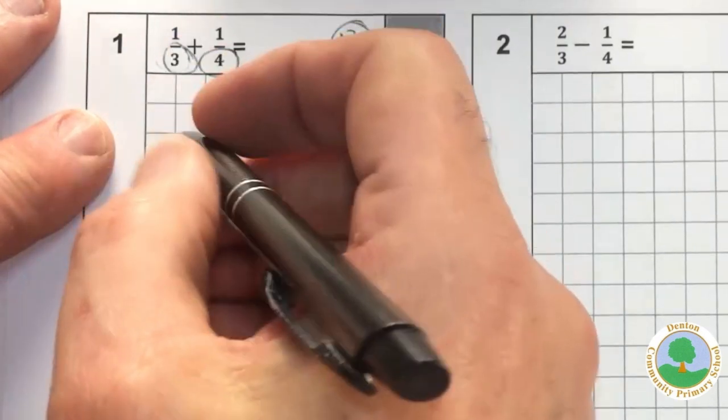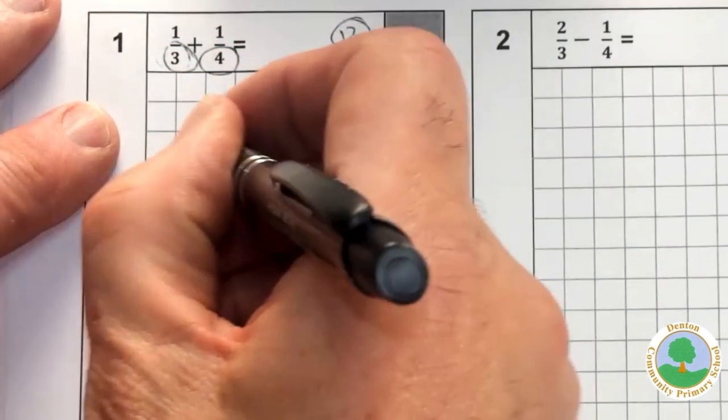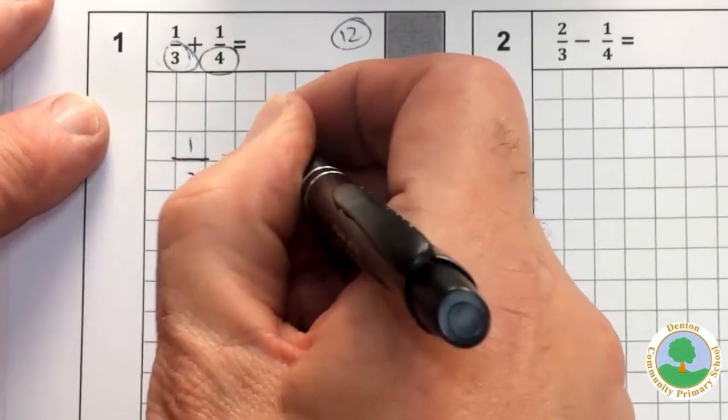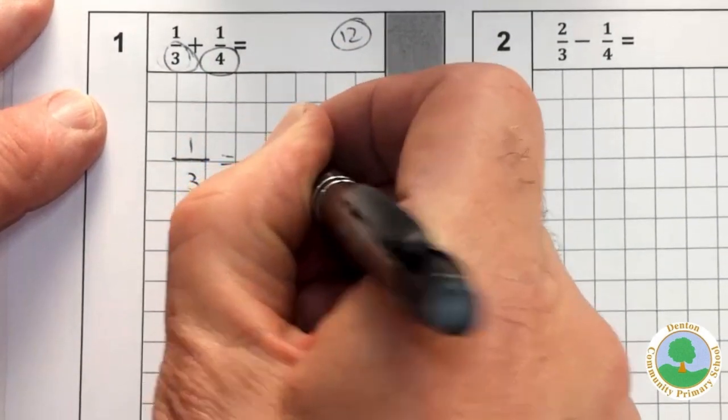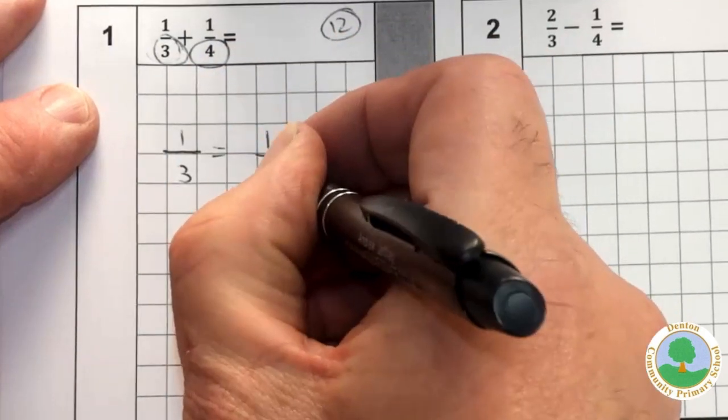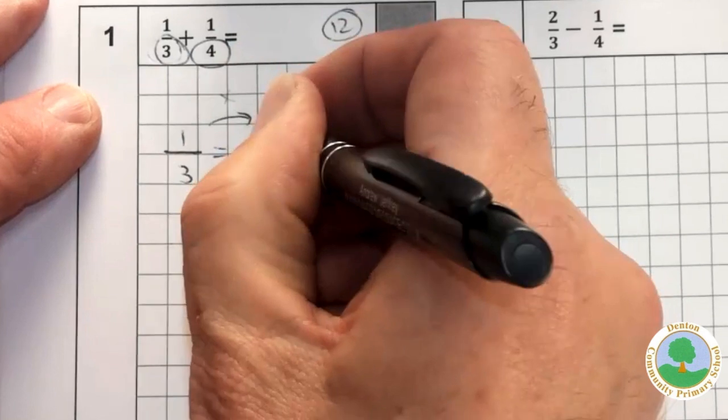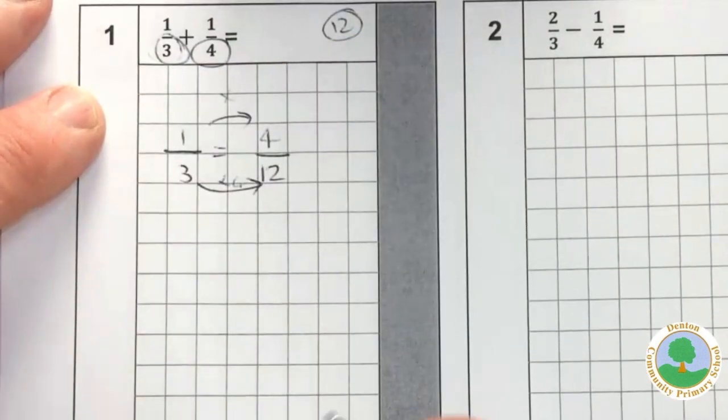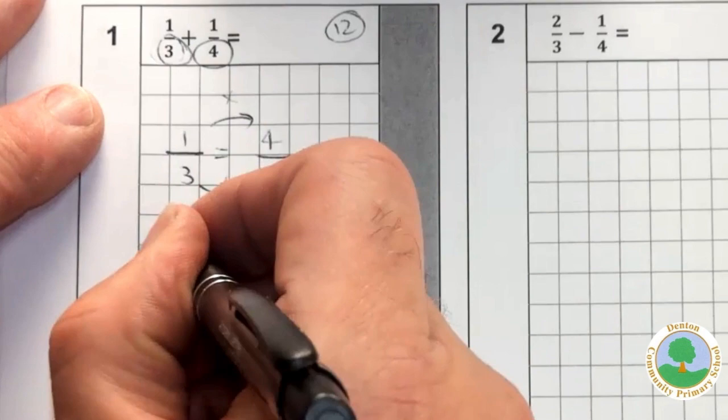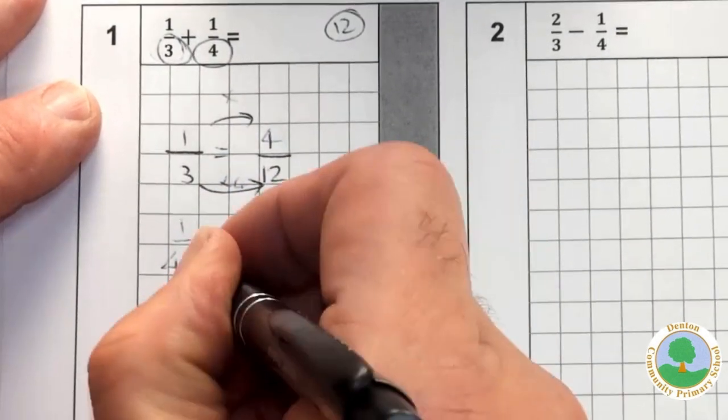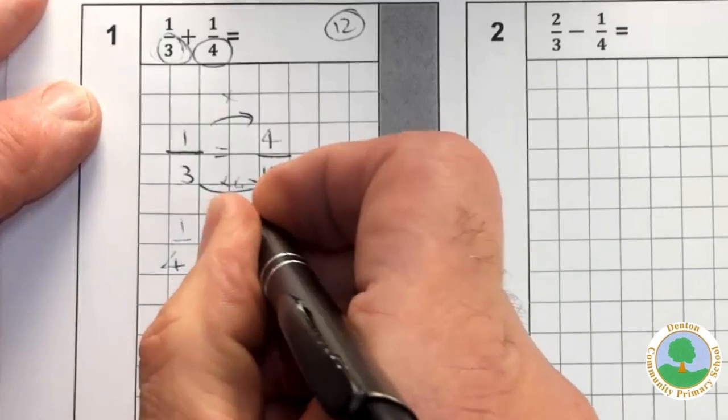So I need to convert. So one third is how many twelfths? Well, I'm sure you remember that it's times four. So one third is four twelfths. And then we do the same with a quarter. One quarter is going to be three twelfths because you need to multiply both by three.